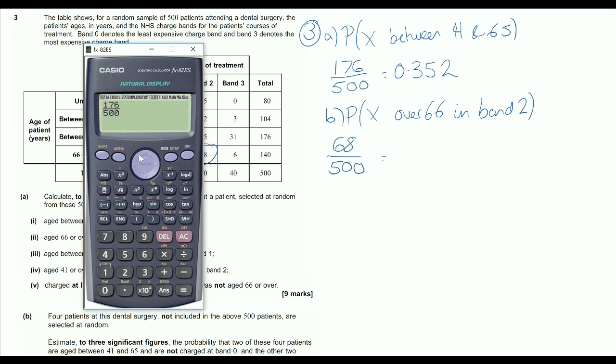So back to our calculator then. Just going to save myself a little bit of time. 68 over the 500 there. And 0.136.